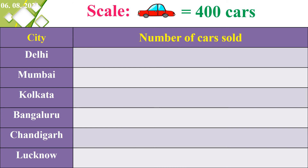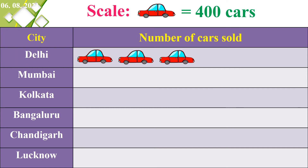For Delhi, cars sold equal 1,200. We divide 1,200 by 400 and get 3, so we draw 3 cars: 1, 2, and 3.